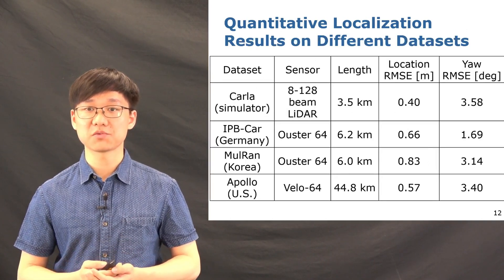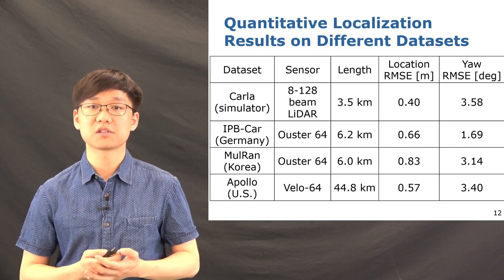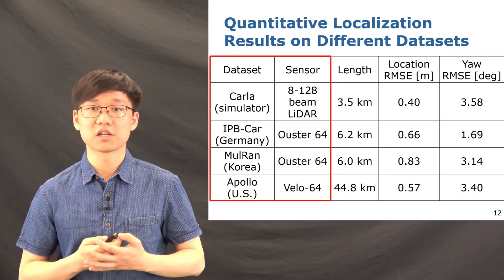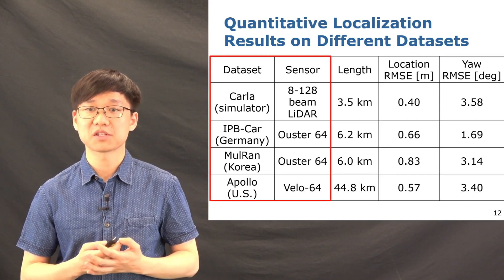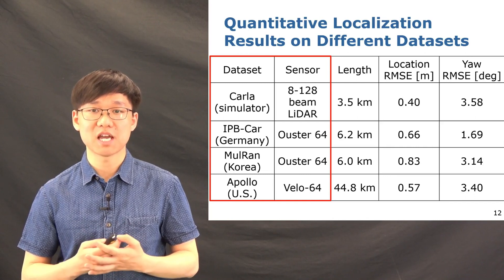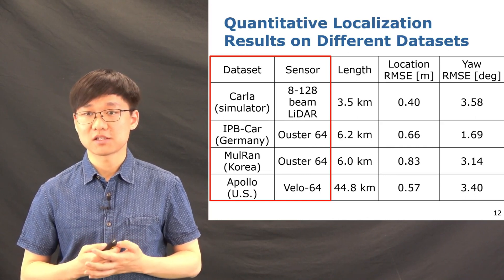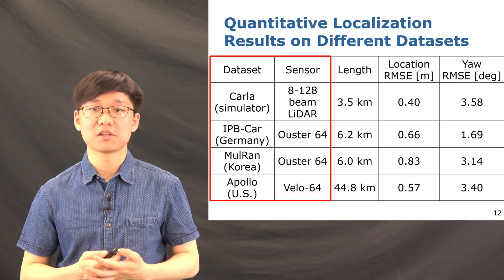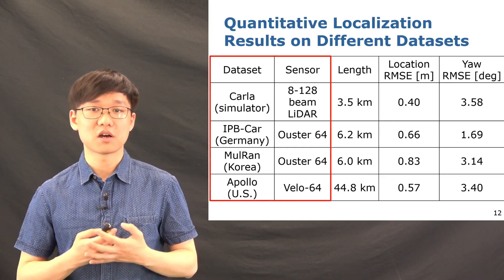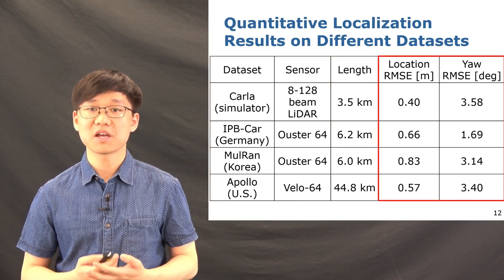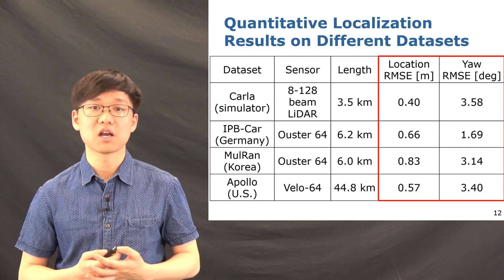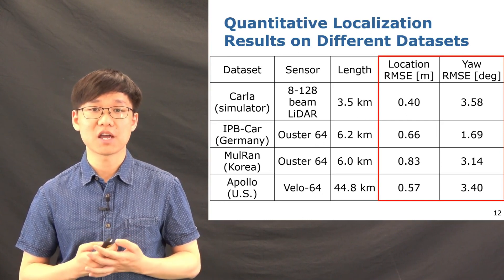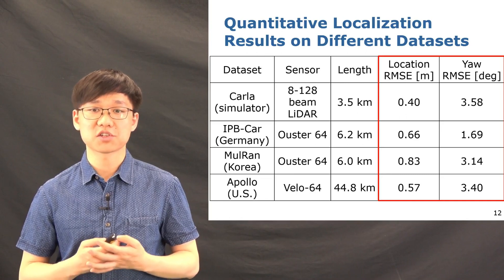Here we also show the localization results of using our localization system on different datasets collected in different environments, with different types of LiDAR scanners. The datasets we use here include the CARLA simulator with five different types of LiDAR scanners, from 8 beams to 128 beams. The IPB-Car dataset collected in Germany with Ouster64, and MulRan dataset collected in Korea with Ouster64, and Apollo dataset collected in the U.S. with Velodyne64. And as can be seen, our method achieves good global localization results on all different datasets. With location RMSE around half meter and Yaw angle RMSE within four degrees in large scale outdoor environments.